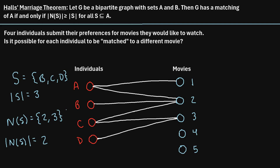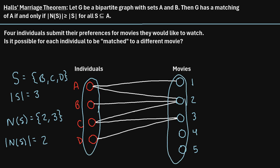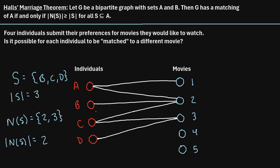That's what we just verified. In more informal terms, if we have these three vertices, we can see that altogether they only connect to two potential vertices on the other side. There's no way to assign three individuals to each watch their own movie when there are only two different movies to choose from. That is why a matching does not exist in this scenario. That's all Hall's Marriage Theorem is really saying: if you want to match a set of vertices with another set, then for every subset, the neighborhood of that subset must be at least as large as the subset itself, or else a matching does not exist.